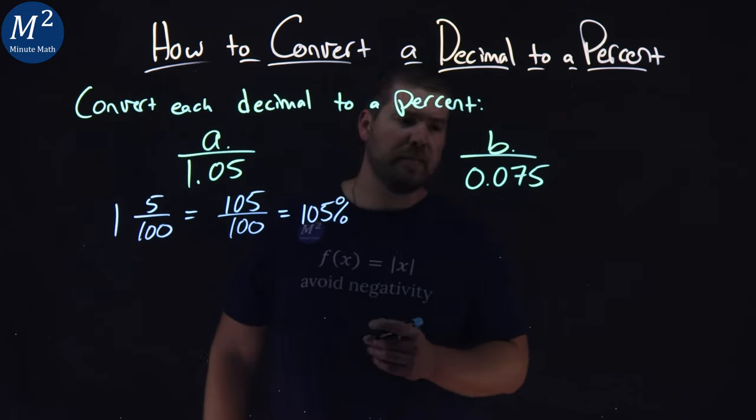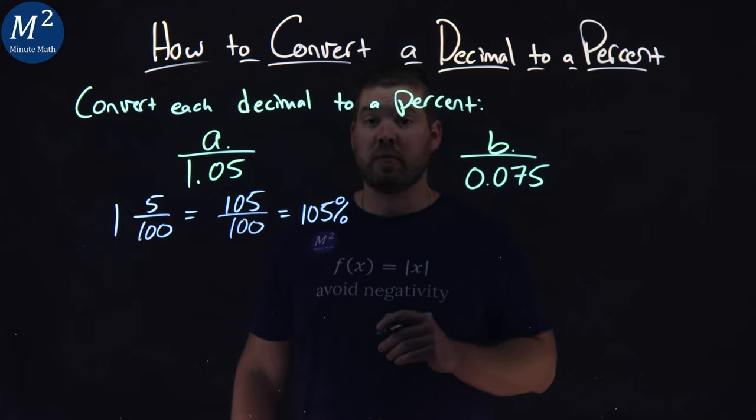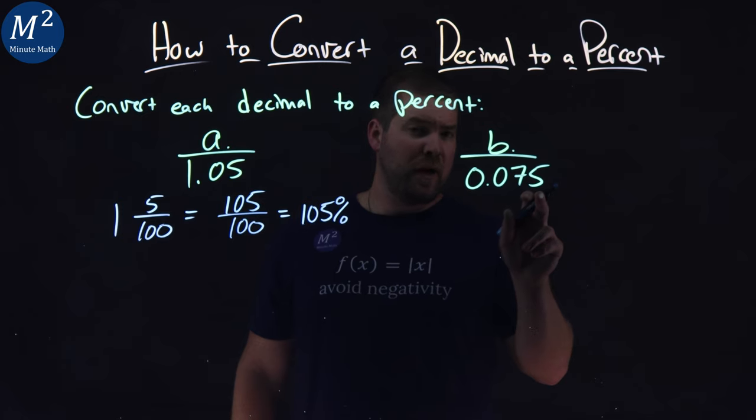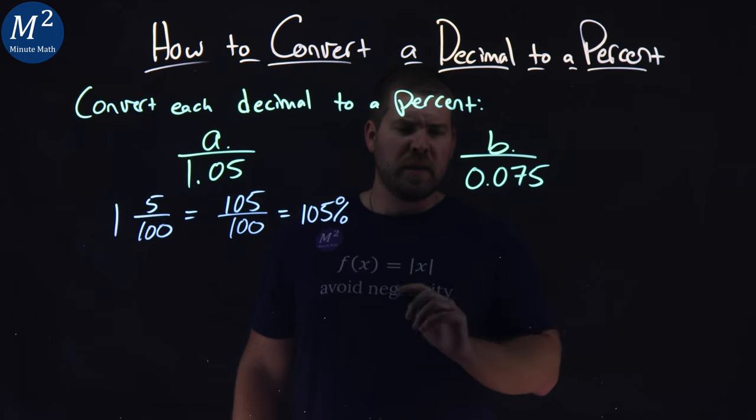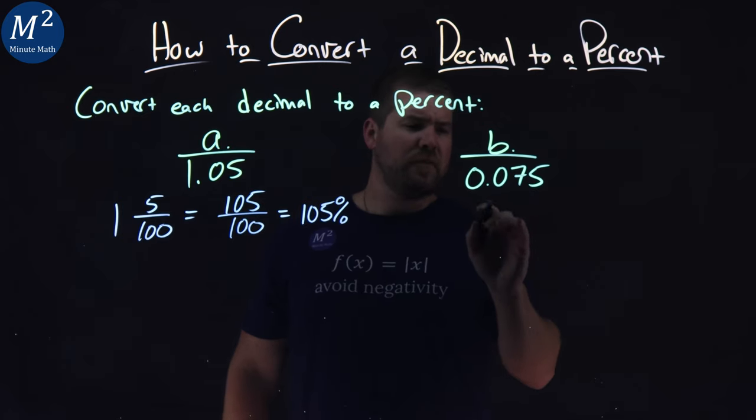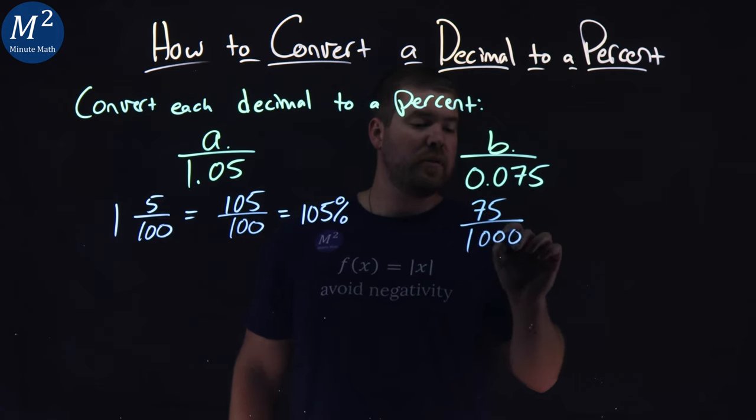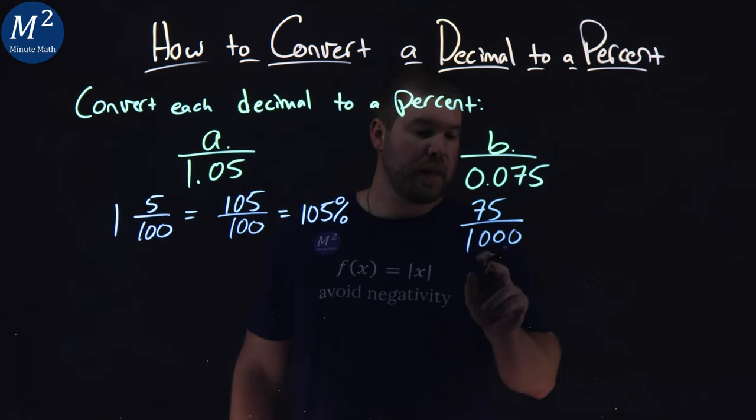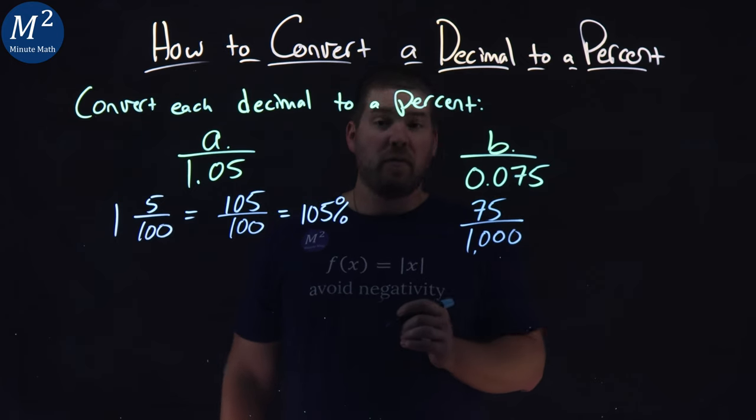The second one, same idea. Let's write this as a fraction, 0.075. We're in the thousandth place here. So we have to write this as 75 over 1,000.